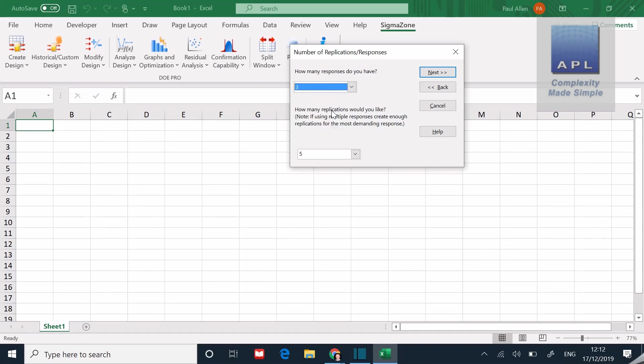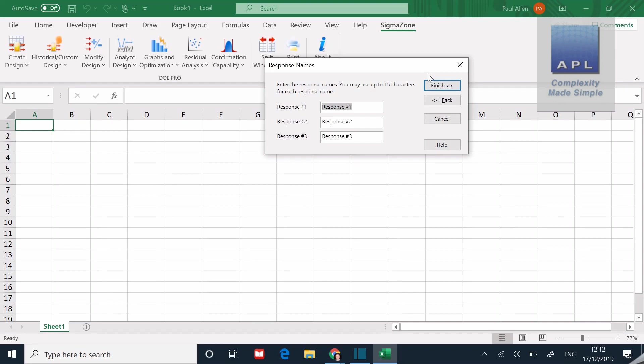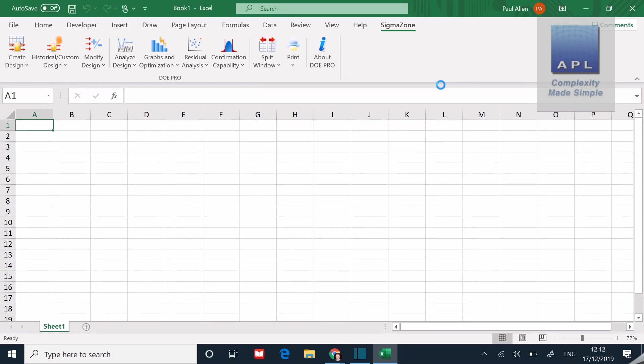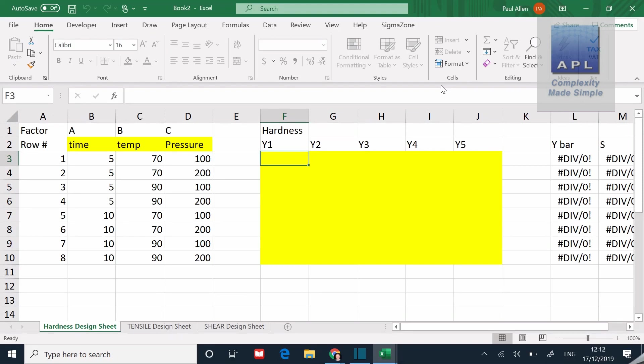Then I can click next. And it then says to me, what are the three responses called? And of course I can then call them hardness, tensile, and shear. If I put those three titles in the three response boxes, press complete, and then look, now what I've got is the DOE table. If you look at the bottom of the Excel file, there are three tables empty, waiting for the data to be collected and the DOE to be done. That's how DOE Pro sets the experiment up in the first place.